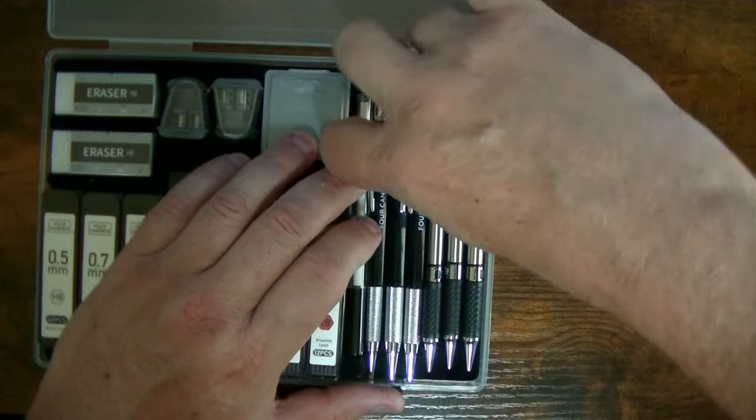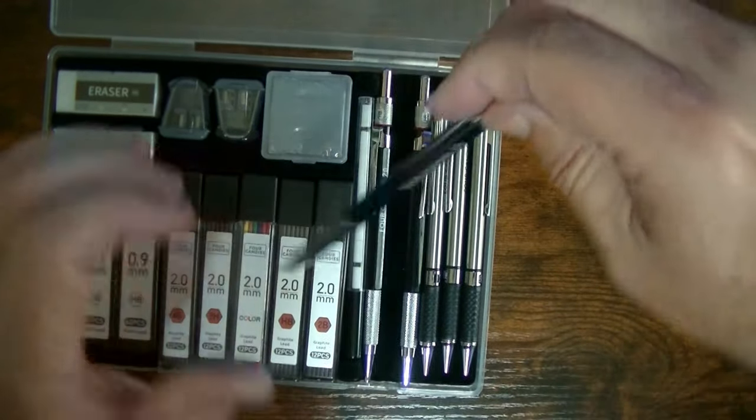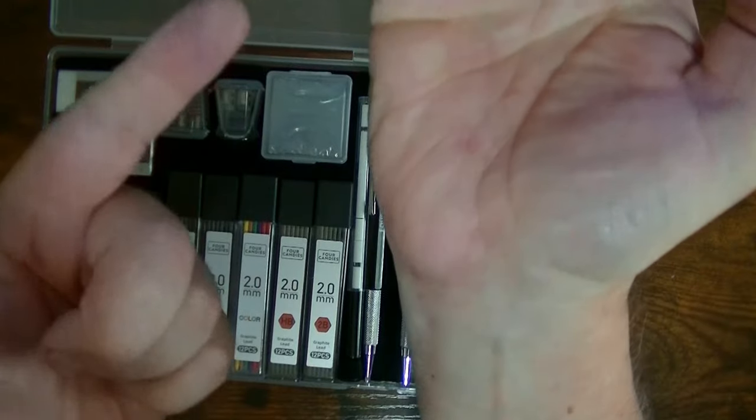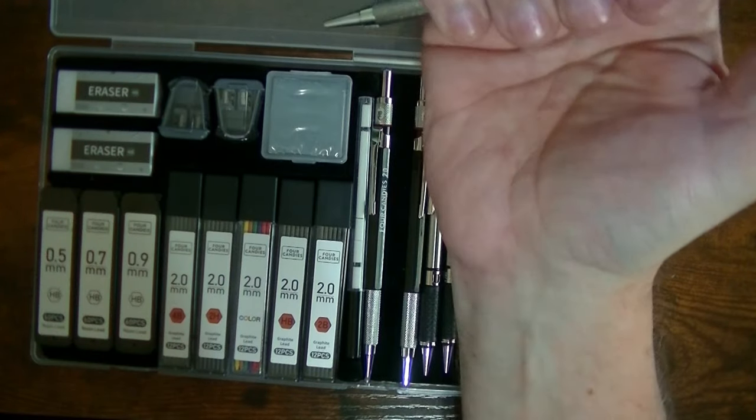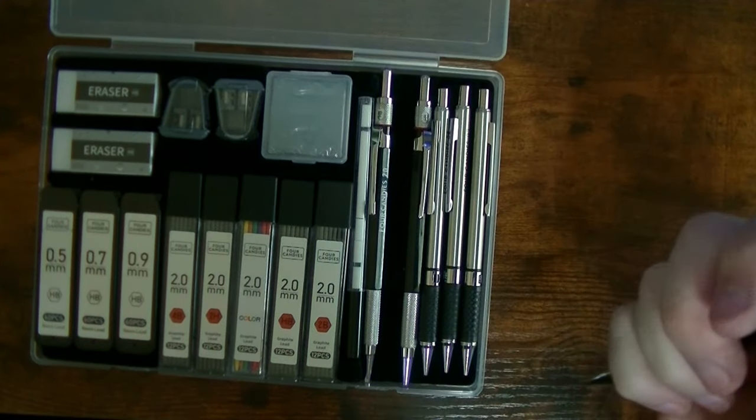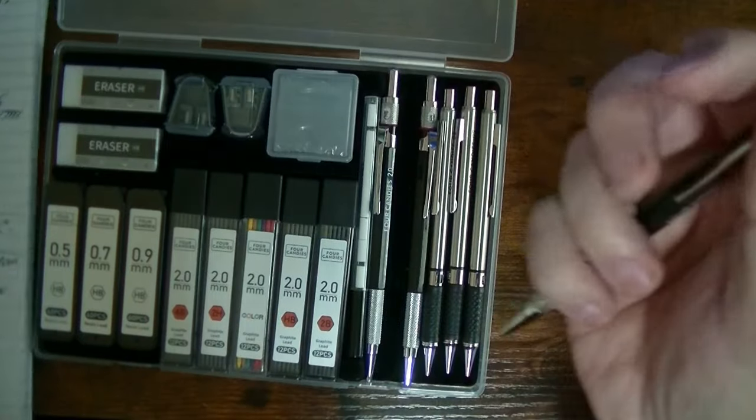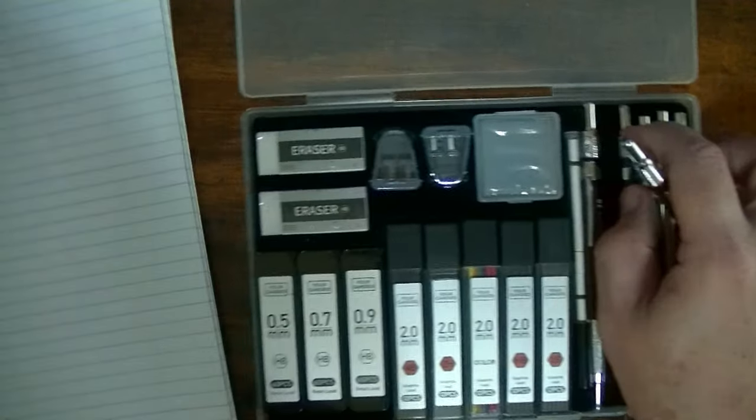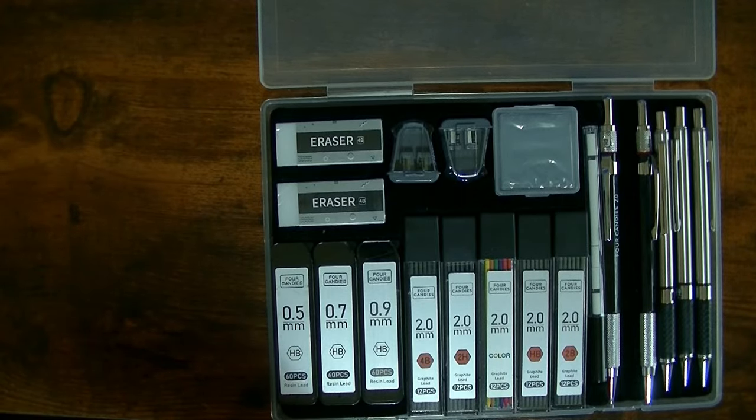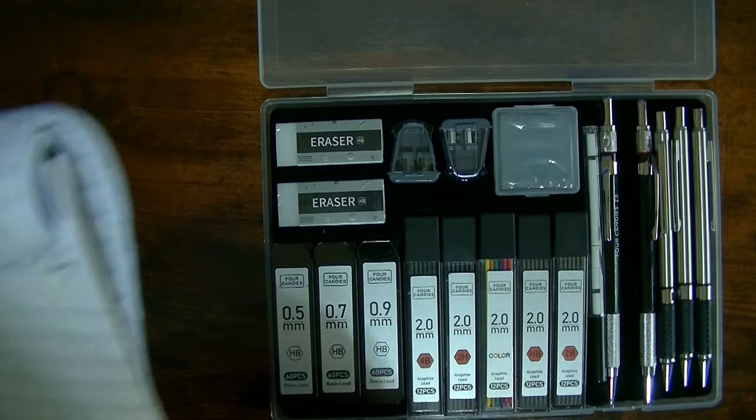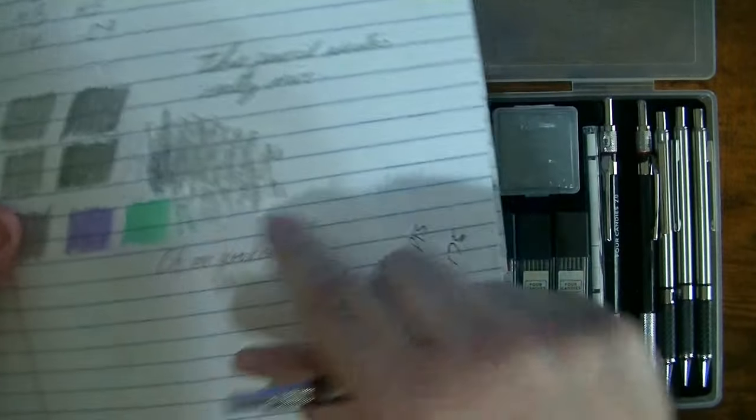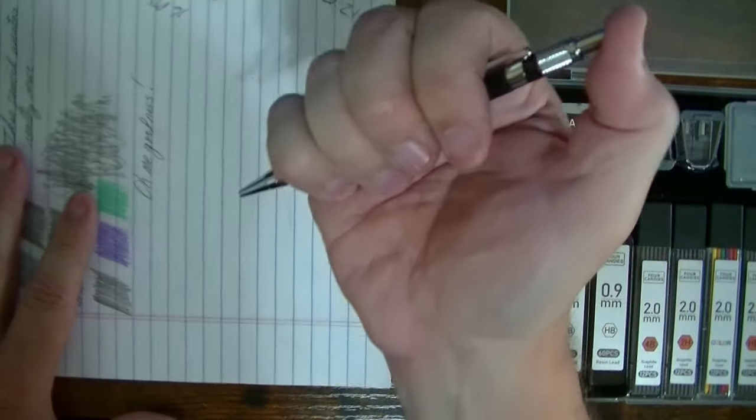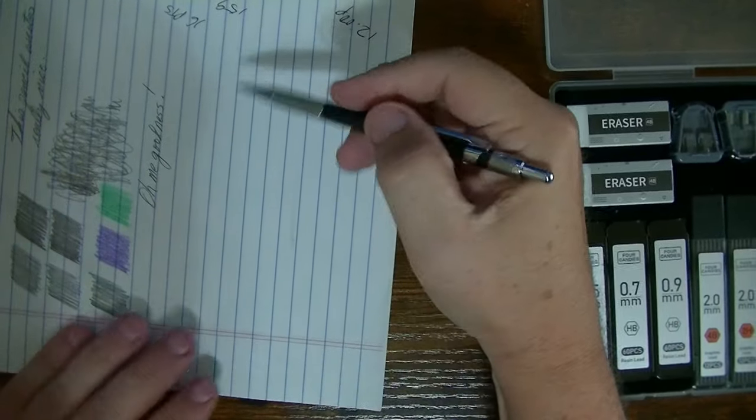Now, as I said, you have three of these 2.0s, as you can see here. There's another one. It also is preloaded with lead. Now from what I can tell, these are HBs that are preloaded in here. So I'm going to grab some paper here. Let me grab another one here. You can see that I was already having some fun with this thing.